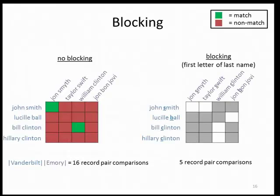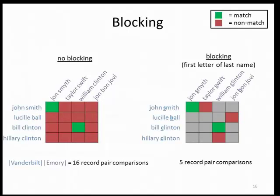Blocking reduces the computational complexity by making a rough partition of the record pairs and graying out some from consideration. Here the blocking variable is the first letter of the last name, so we only compare records whose last name begins with the same letter. For example, John Smith is only going to be compared to the other John Smith and Taylor Swift — other record pairs are grayed out and classified as non-matches immediately. We then do a more fine-grained analysis on remaining record pairs to identify matches. In this case we've reduced the number of record pair comparisons from sixteen down to five. The goals of blocking are to reduce computational complexity while maintaining the accuracy of record linkage.